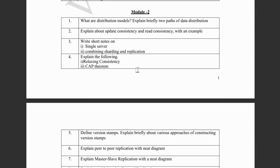Moving on to the second module, which is again a pretty easy module. They have asked about what are the distribution models — sharding, single server, master-slave, peer-to-peer and all those things. We have to briefly explain the two parts of data distribution. Then they have asked about update consistency and read consistency with an example — the write-write scenario and the read-write conflict — along with a figure about list items, shipping items, and a diagram about Martin promote communication. Then a short note on single server combining the sharding and replication topic — a very easy one.